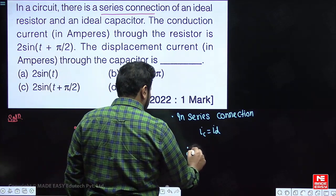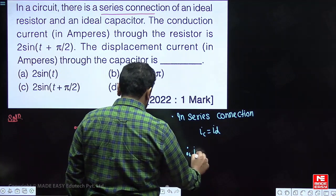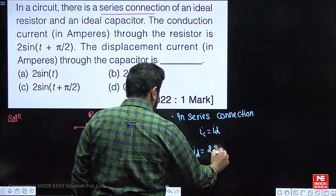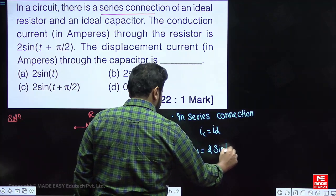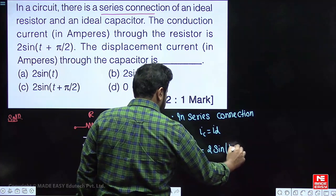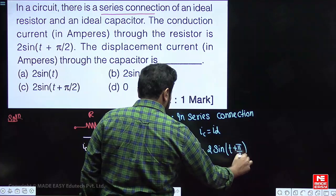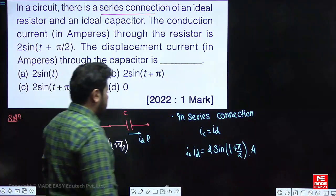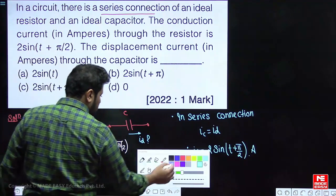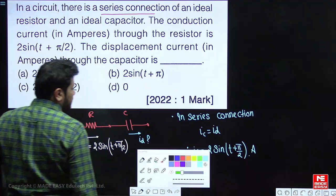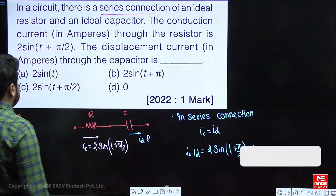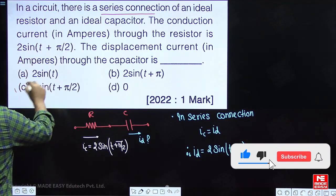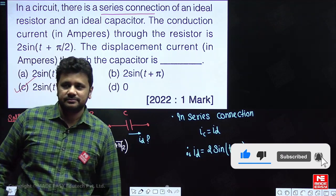Therefore, they are asking the value of Id. Id will be the same as 2 times sin(t + π/2) ampere. Looking at the options, Id = 2sin(t + π/2), so option C is correct.